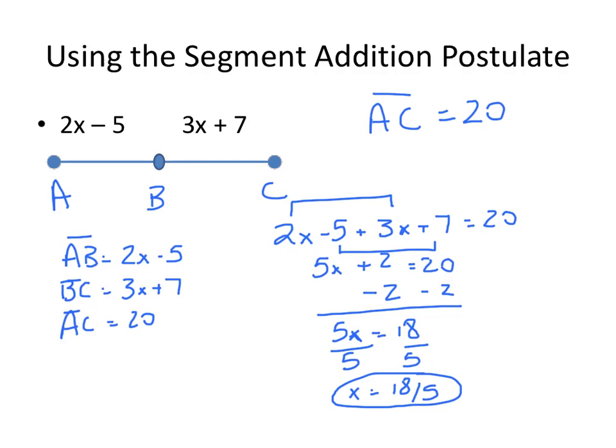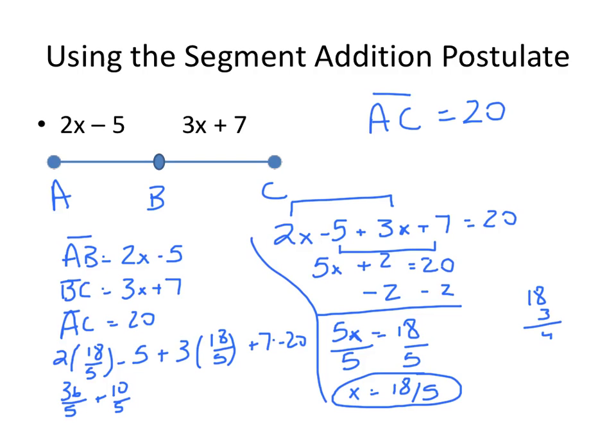We need to also check our work. So if we have 2 times 18 fifths minus 5 plus 3 times 18 fifths plus 7, we should get 20 for that. So 2 times 18 is 36. So 36 fifths. I'm going to turn this into negative 5 and positive 7, which is 10 fifths. And 18 times 3 is 54, so 54 fifths.